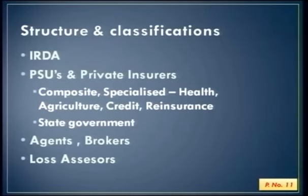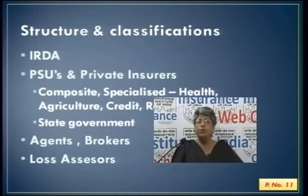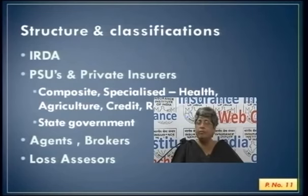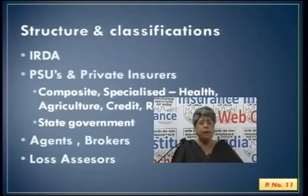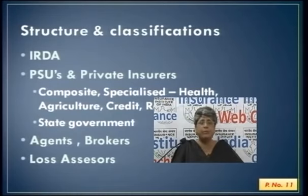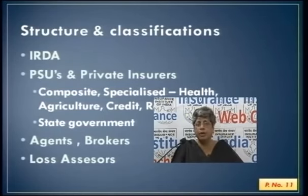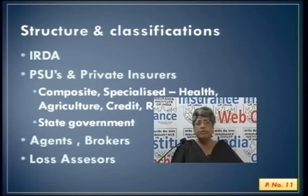The IRDA is the controlling body. It has been introduced to control insurance, to bring in rules and regulations, to put in place practices, to take care of policyholders' interests, and to ensure proper development of the insurance industry in India. The four public sector companies continue, and in addition we have private insurance companies — both privately owned Indian companies as well as those with foreign shareholding. As of today, foreign shareholding is restricted to 26% of the paid-up capital. The initial paid-up capital was 100 crores, which has grown as companies have expanded.